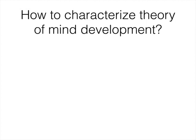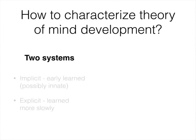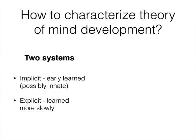So how do we explain preschoolers' failures on classic false belief tasks when infants seem to show this basic understanding of other people's beliefs? One possibility is that there are two systems in play, an implicit and explicit theory of mind, with the implicit system being learned early or innate and the explicit system being learned more slowly.